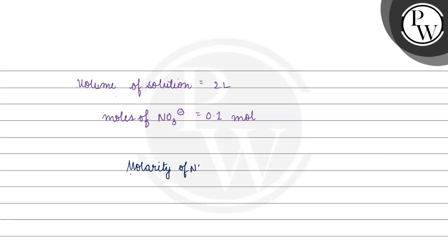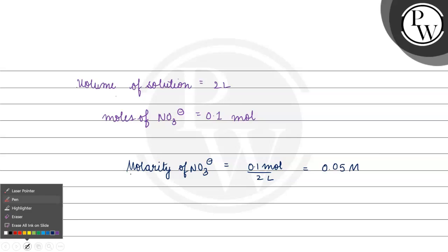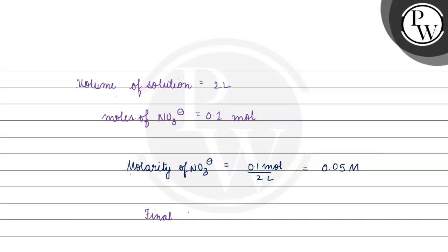Molarity of nitrate ion is basically equal to number of moles of nitrate ion by volume, which is 0.1 mol by 2 L equals 0.05 molar. And this is the final answer for this question.